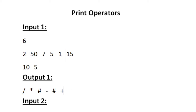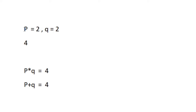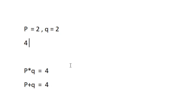The question specifies that we must follow the precedence order: division, multiplication, addition, subtraction. For example, if p=2 and q=2, and we check for 4: both 2 times 2 and 2 plus 2 equal 4. But in the output we print multiplication, because multiplication has higher precedence than addition.